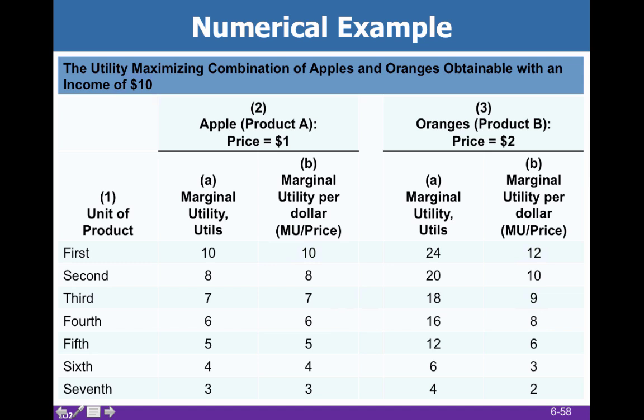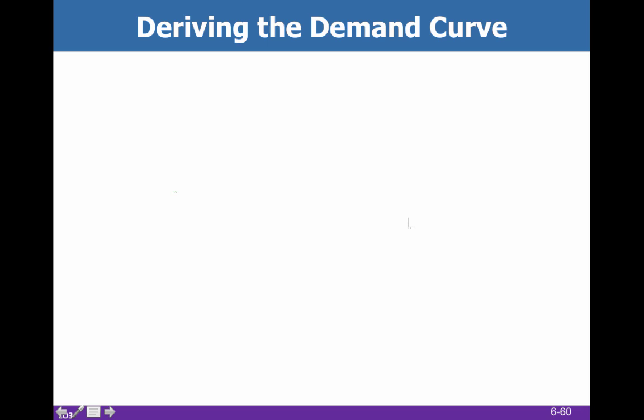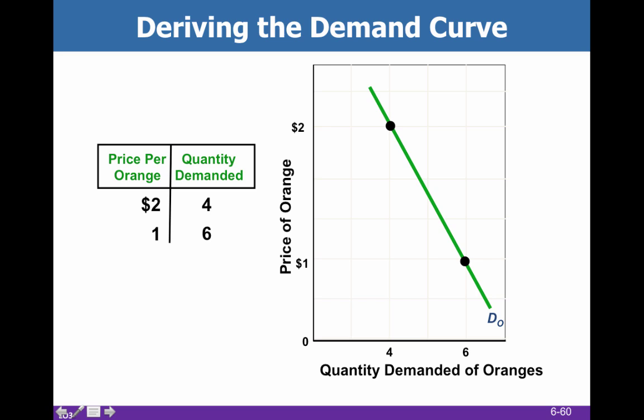Moving on — our quantity demanded for oranges follows a downward sloping demand curve. When the price of oranges falls, we're going to demand a greater quantity, which we know because of the law of demand. We're rationalizing the downward sloping demand curve per the law of diminishing marginal utility, but nothing new there — we already knew that the demand curve sloped down.